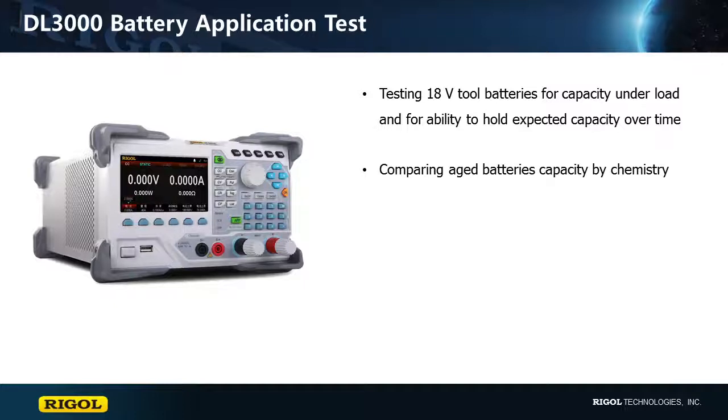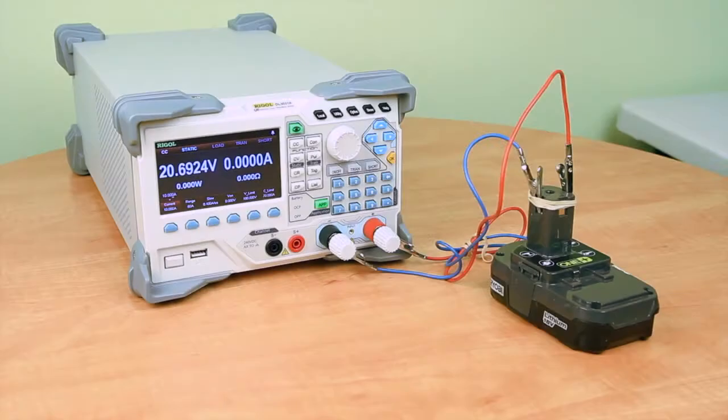We will analyze service life and capacity on a number of batteries and draw conclusions about each battery's capability and usefulness. Let's take a look at our test setup for one of our 18 volt lithium battery tests. Here we are with our DL3031A electronic load connected to an 18 volt lithium ion tool battery. Let's first take a look at how we're going to set up this battery test.